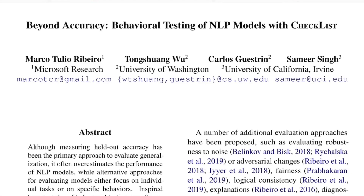Hi there, welcome to the new video. Today we'll be going through this paper, which is titled as 'Beyond Accuracy: Behavioral Testing of NLP Models with Checklist.' This is from researchers from Microsoft, University of Washington, and University of California, Irvine. This paper won the ACL 2020 best paper award.